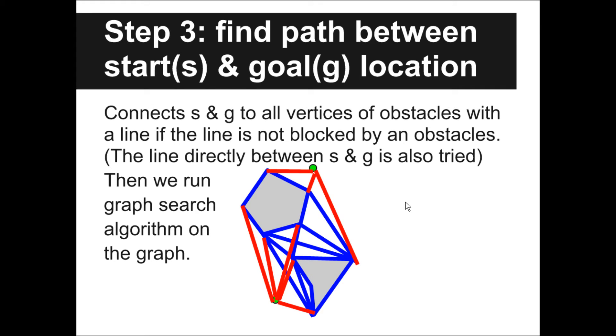Then, with the additional nodes for start and goal and the edges connecting them to other nodes in the visibility graph, we can run the graph search algorithm to find the path between them.